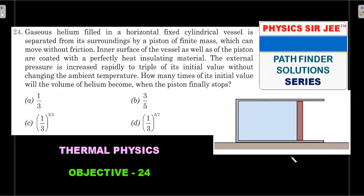Problem 2: Gaseous helium is in a horizontal fixed cylindrical vessel, separated from surroundings by a piston of finite mass that can move without friction. Inner surfaces of the vessel and piston are coated with perfectly heat-insulating material, so no heat transfer occurs. The external pressure is increased rapidly to triple its initial value without changing ambient temperature. How many times the initial volume will the helium's volume become when the piston finally stops?